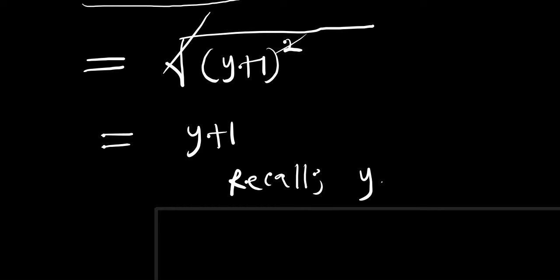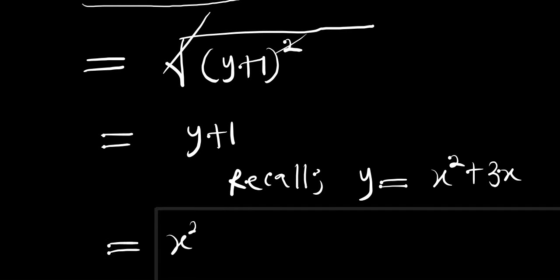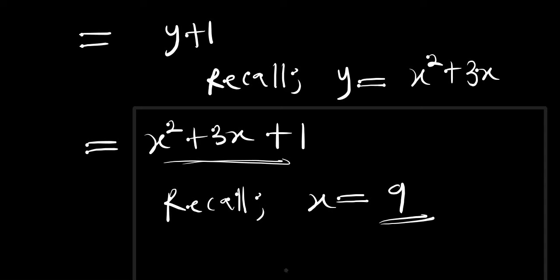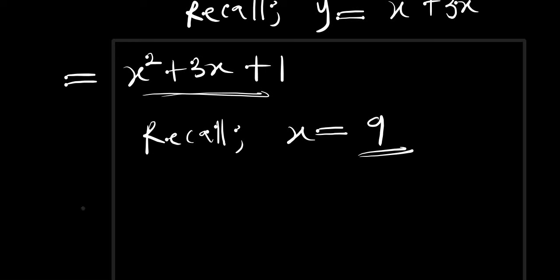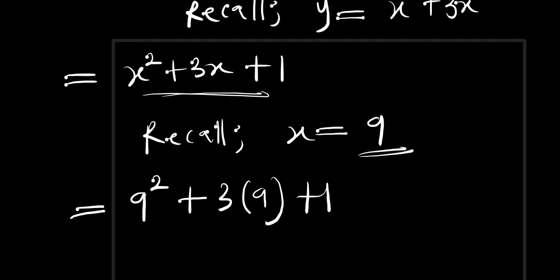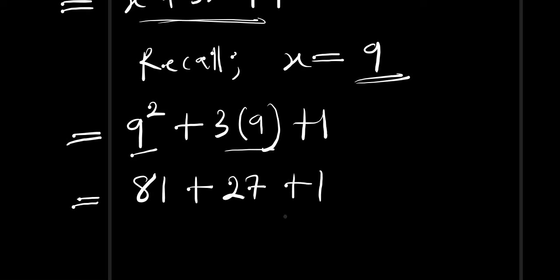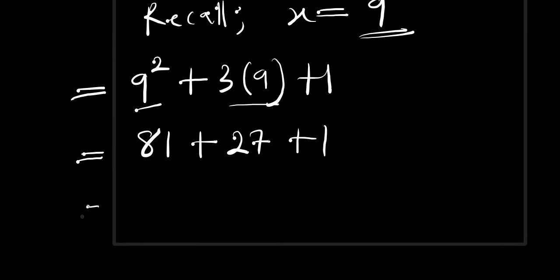Recall also that x equals 9. So replacing y, we have x squared plus 3x plus 1, and substituting x equals 9 gives us 9 squared plus 3 times 9 plus 1, which is 81 plus 27 plus 1. Adding everything up: 81 plus 27 plus 1 equals 109.